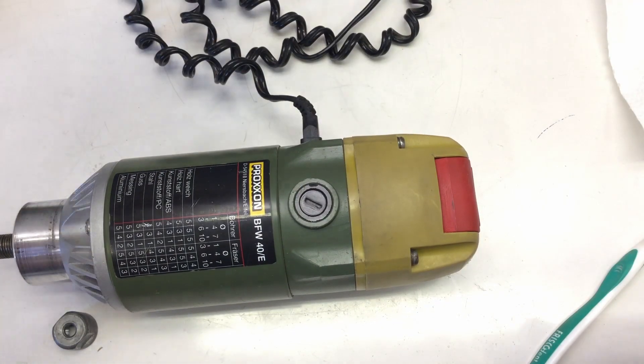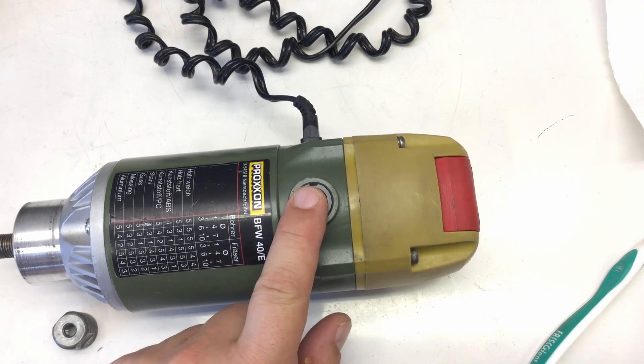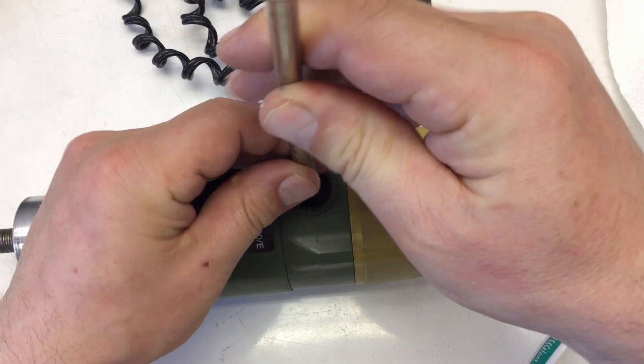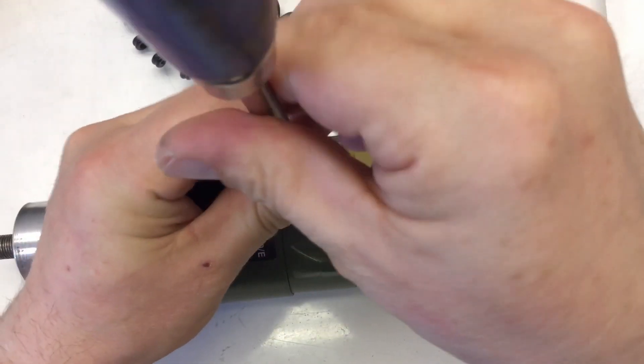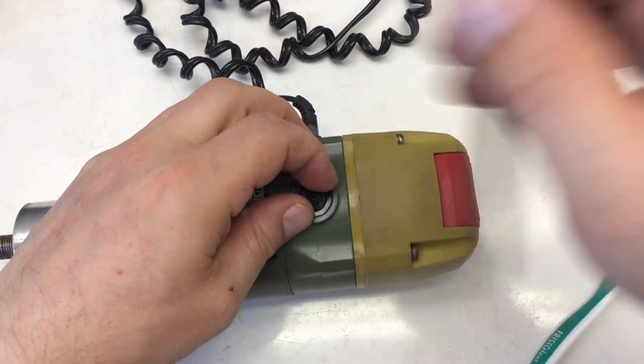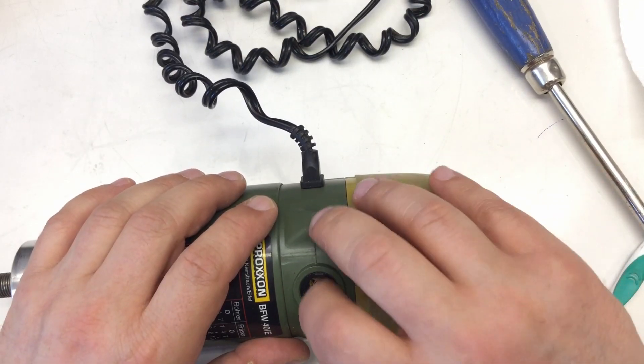But what I really want to check is the brushes because that's a brushed DC motor in here. 40 volts, 250 watts, and so I really want to make sure that the brushes are still okay.